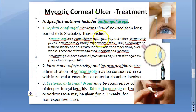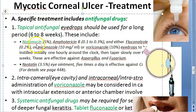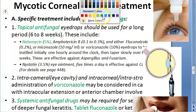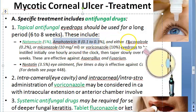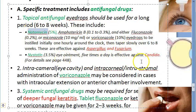Treatment is straightforward — give antifungal drugs. Topical antifungals should be used for a long period, up to 6 to 8 weeks. Natamycin 5% is the key topical drug, along with Amphotericin B, Fluconazole, Miconazole, and Voriconazole. Natamycin and these drugs are effective against Aspergillus and Fusarium. Nystatin is used against Candida.